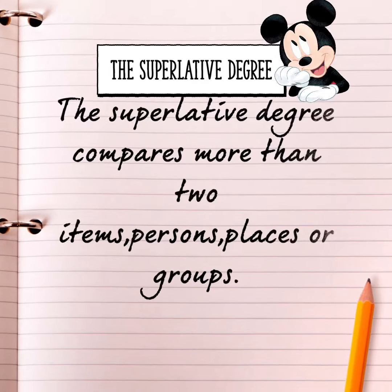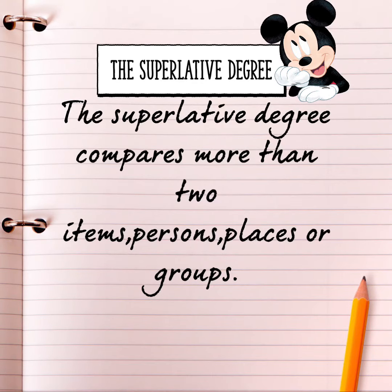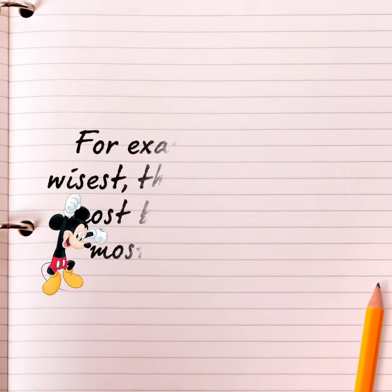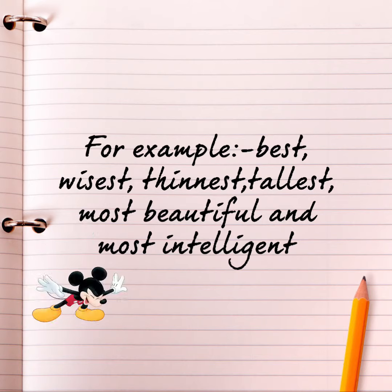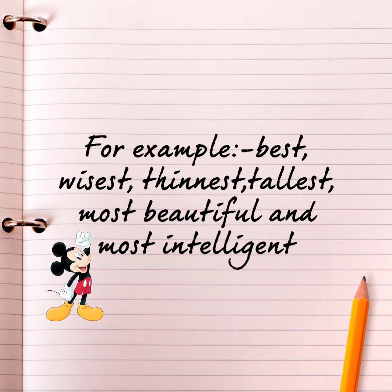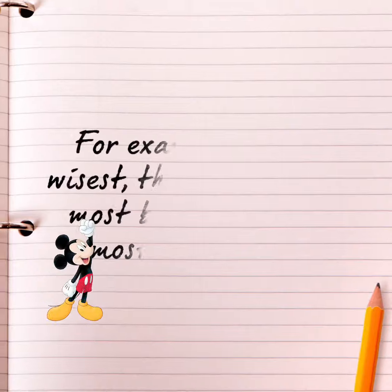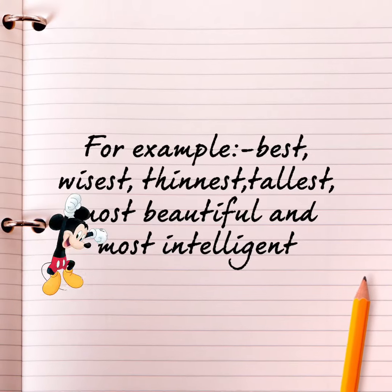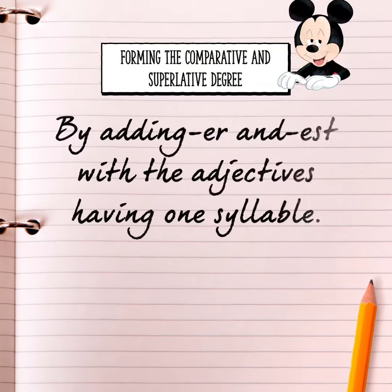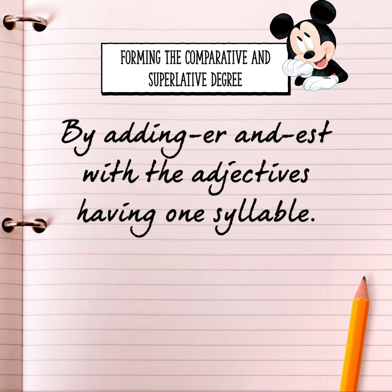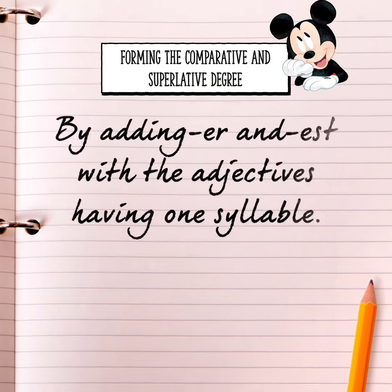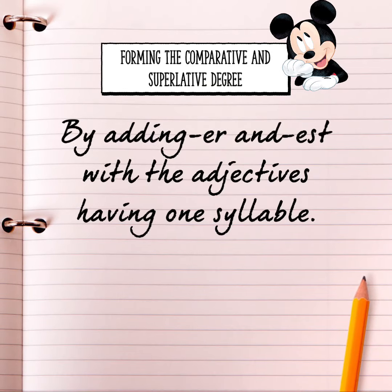The superlative degree compares more than two items, persons, places or groups. For example: best, wisest, thinnest, tallest, most beautiful and most intelligent.